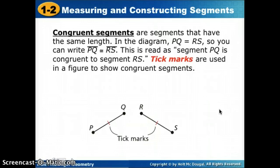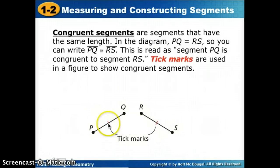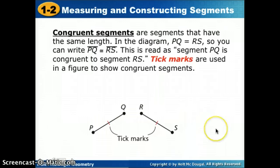When we look in a picture to show that two segments are congruent, we use what we call tick marks. Since these have the same measure, I'll put a tick mark to show that those are equal to each other, or congruent.